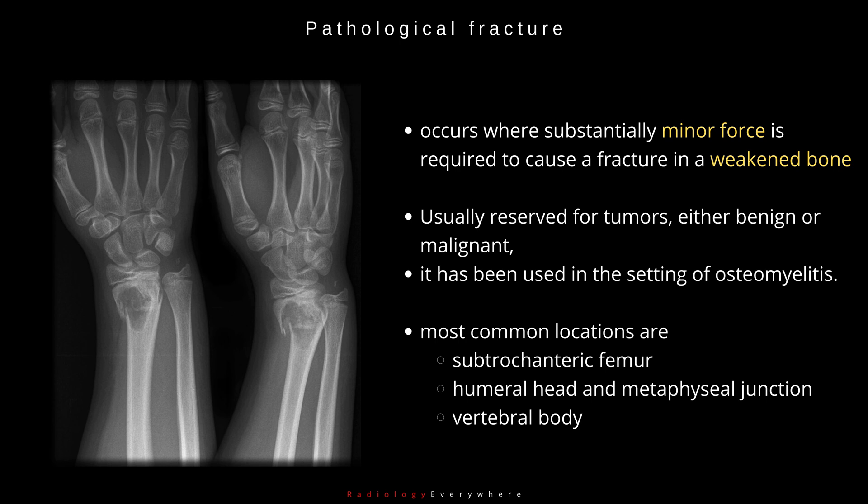Pathological fractures occur in a weakened bone — minor force over a weakened bone. Usually this term is reserved for tumors, either benign or malignant. It can also be used in the setting of osteomyelitis. The most common locations are the subtrochanteric femur, humeral head and metaphyseal junction, and vertebral body.